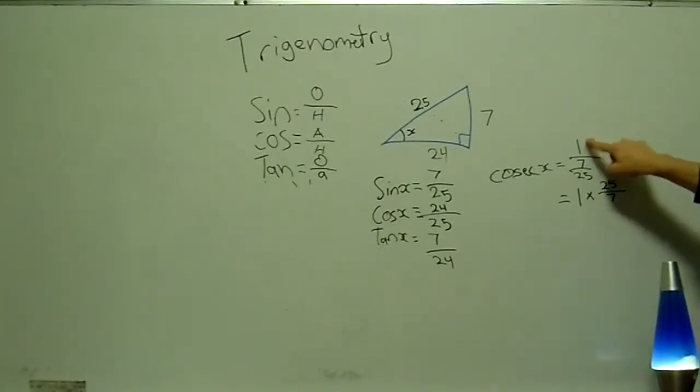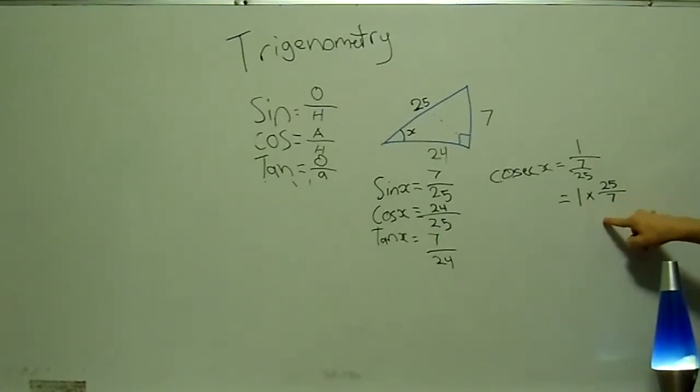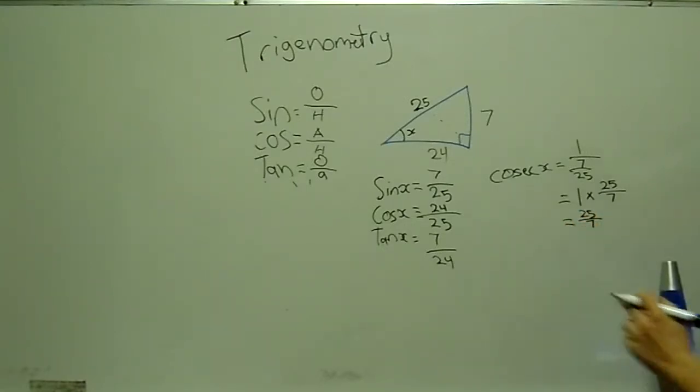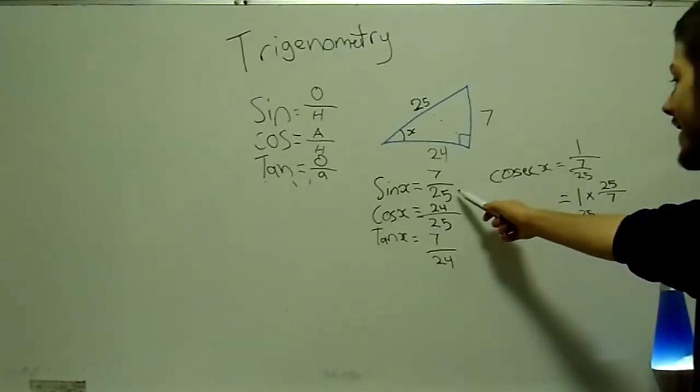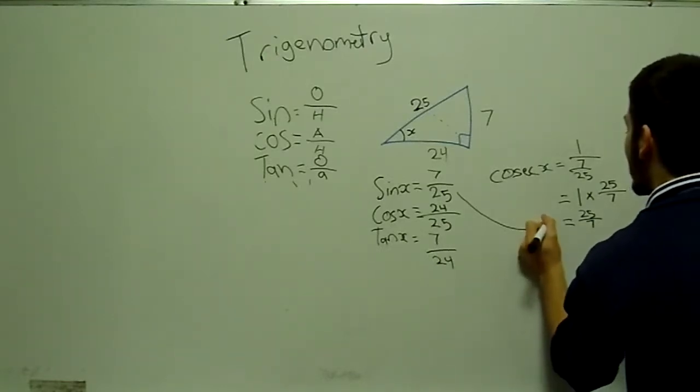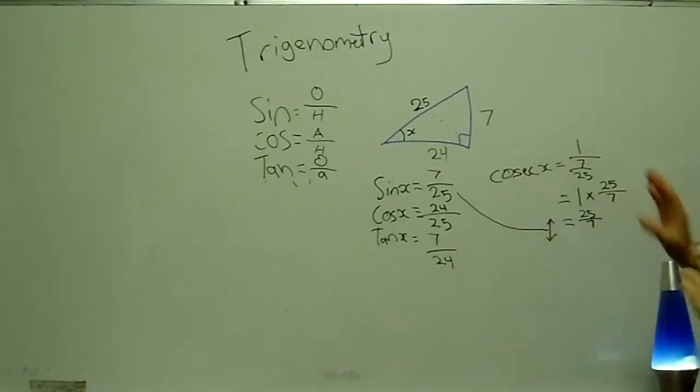So you've got the 1 out here, and when you take this out, you flip it round, because you're multiplying it, so 1 times 25 over 7, and that's just going to give you 25 over 7. Now you don't need to do that most of the time, because you're just going to get this answer, put it over there, and just flip it. That's the easy way to think about it, so you just flip sine, and that's how you get cosec.